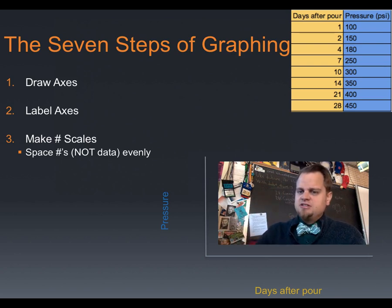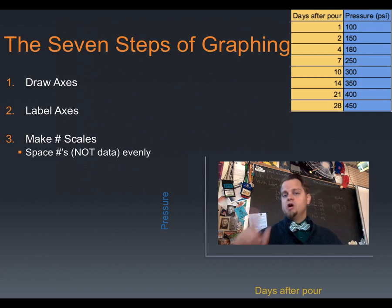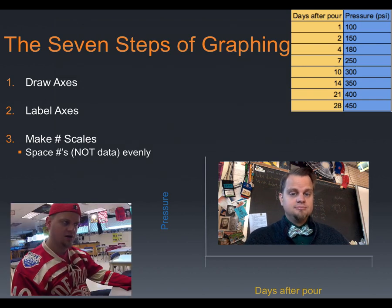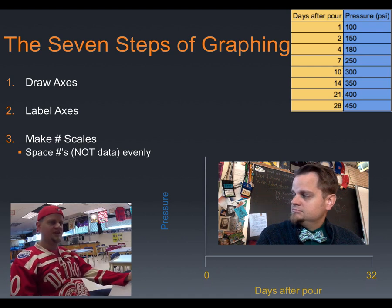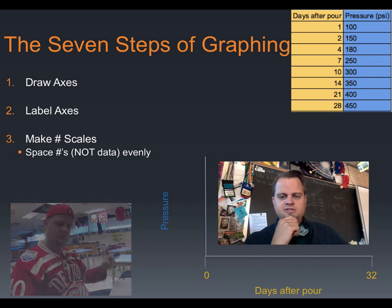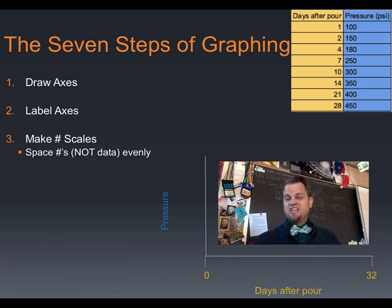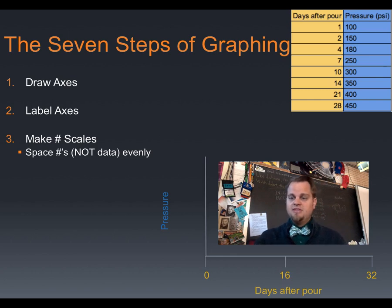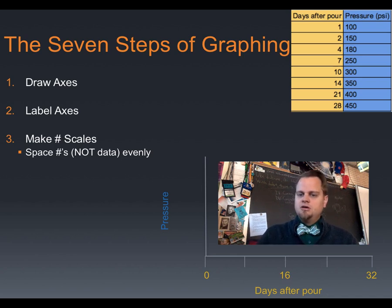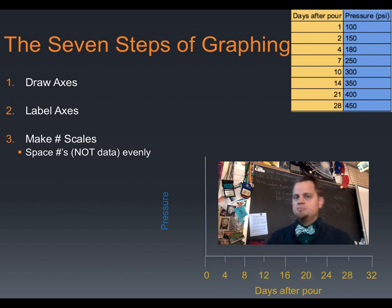Back to our data. The days after the pour goes from one to 28. Since one is very close to zero, especially compared to 28, let's start at zero and end at 32. Why 32? It's not a data point, but 32 divides very nicely in halves, quarters, and eighths. Put a dash right in the middle — that's 16, which is 32 divided by 2. Put dashes in the middle of the other two sections and you get 8 and 24. Mark halfway between the rest of the divisions and you get numbers that go up by fours. It's a nice easy way to make this scale perfect.